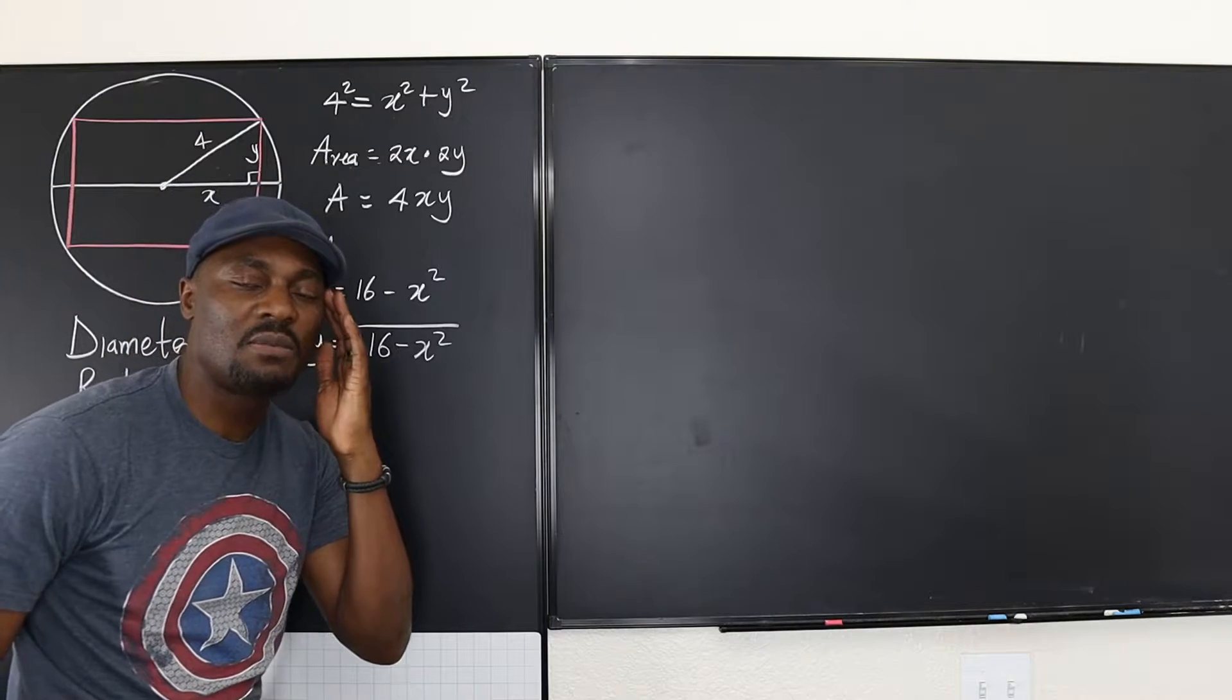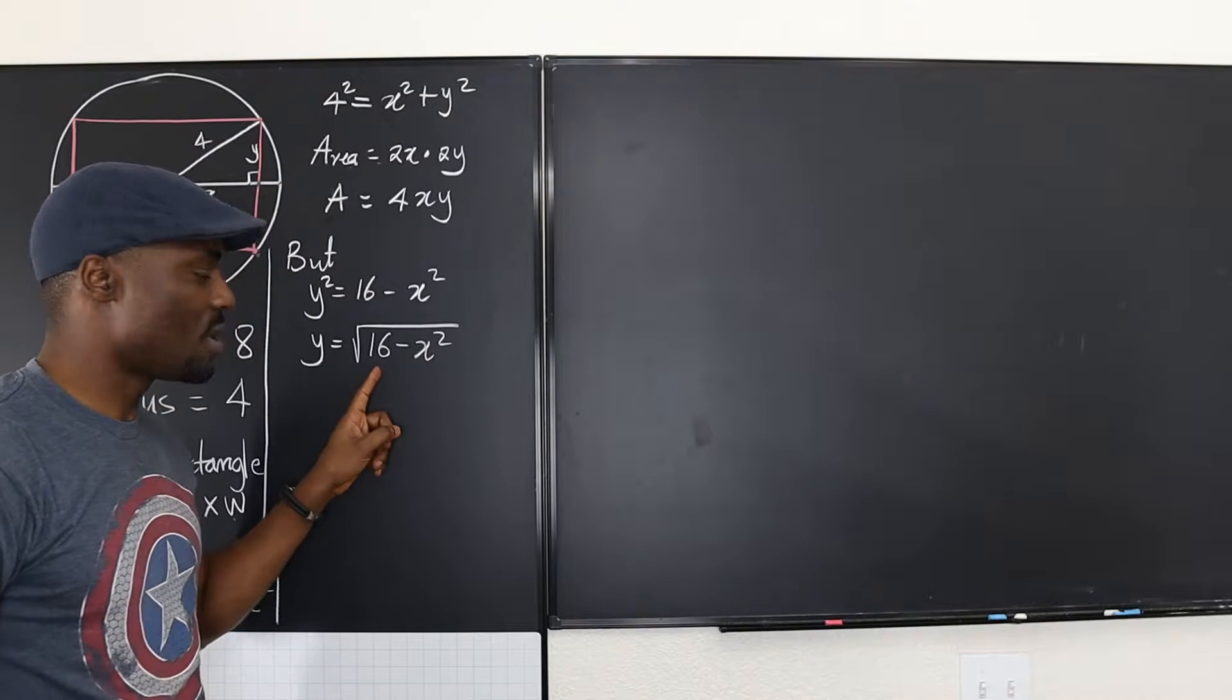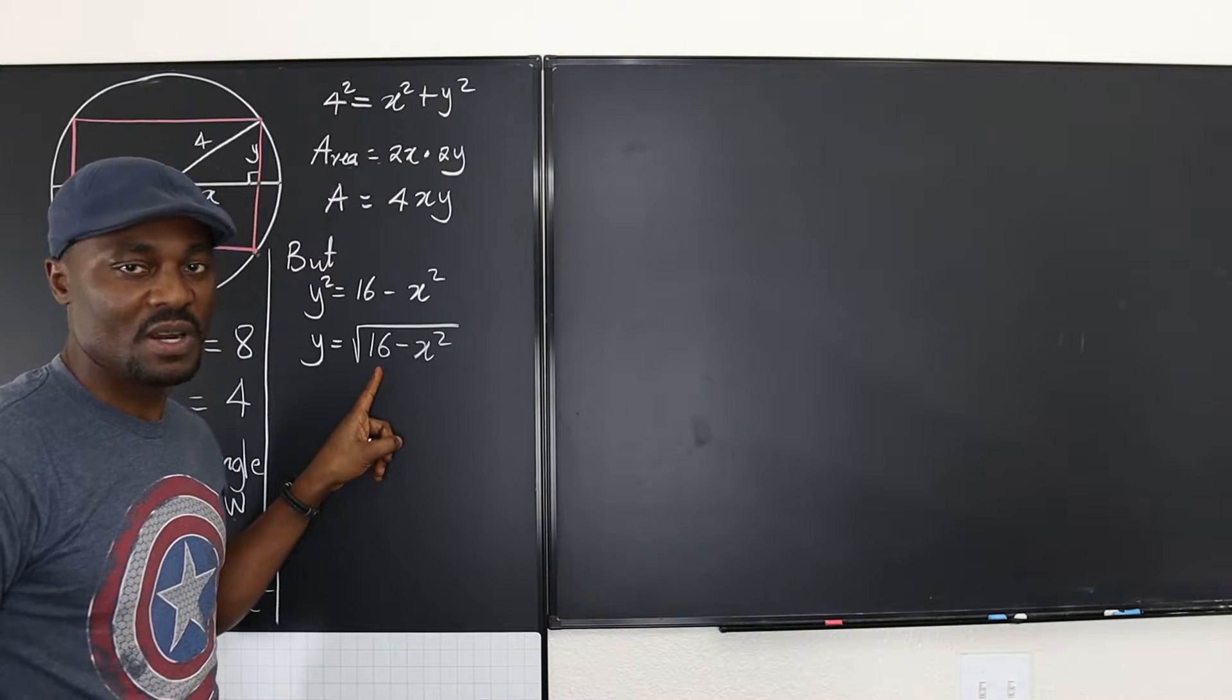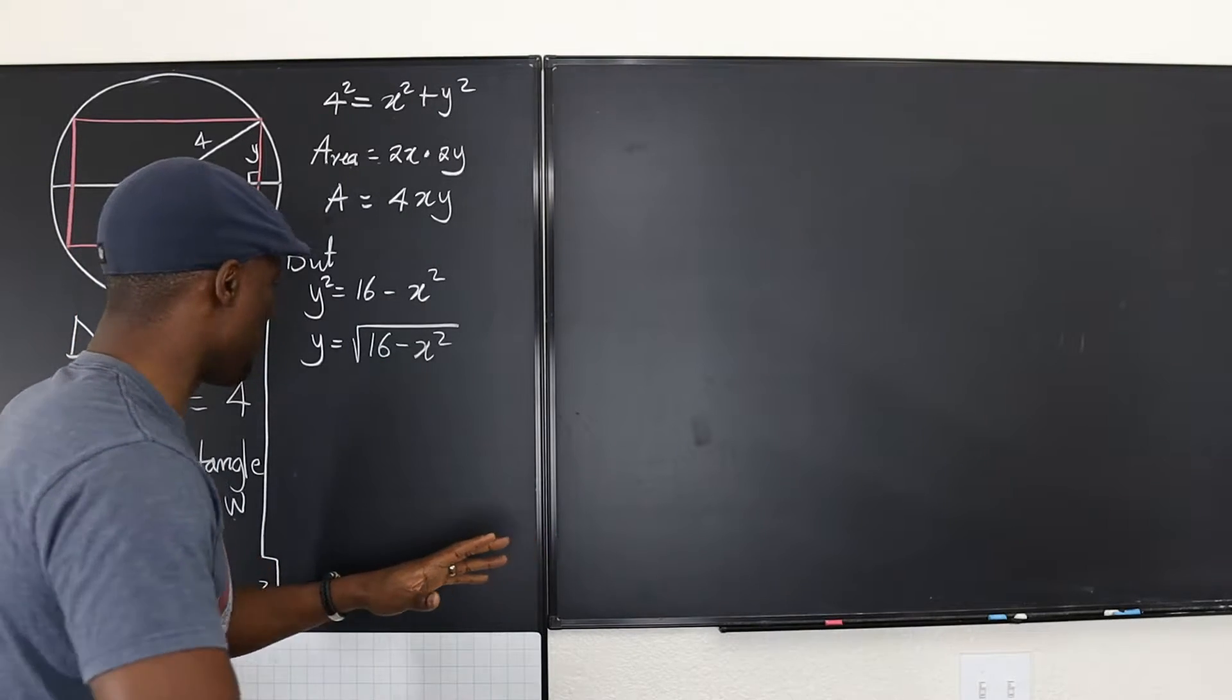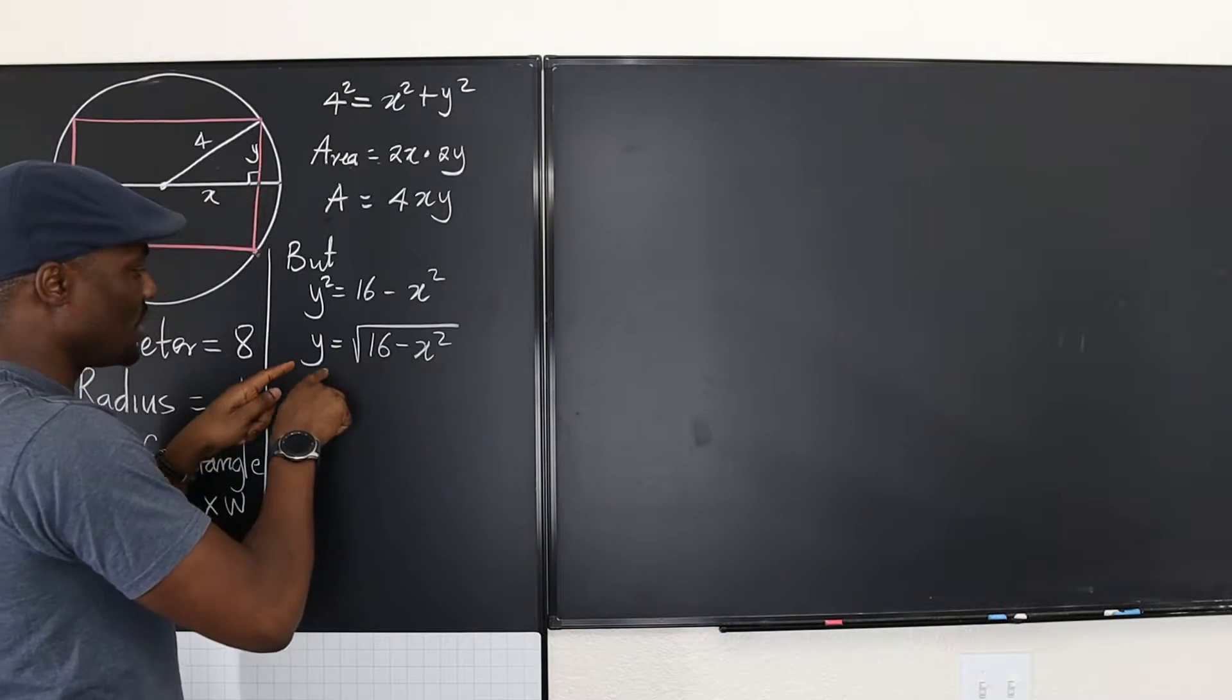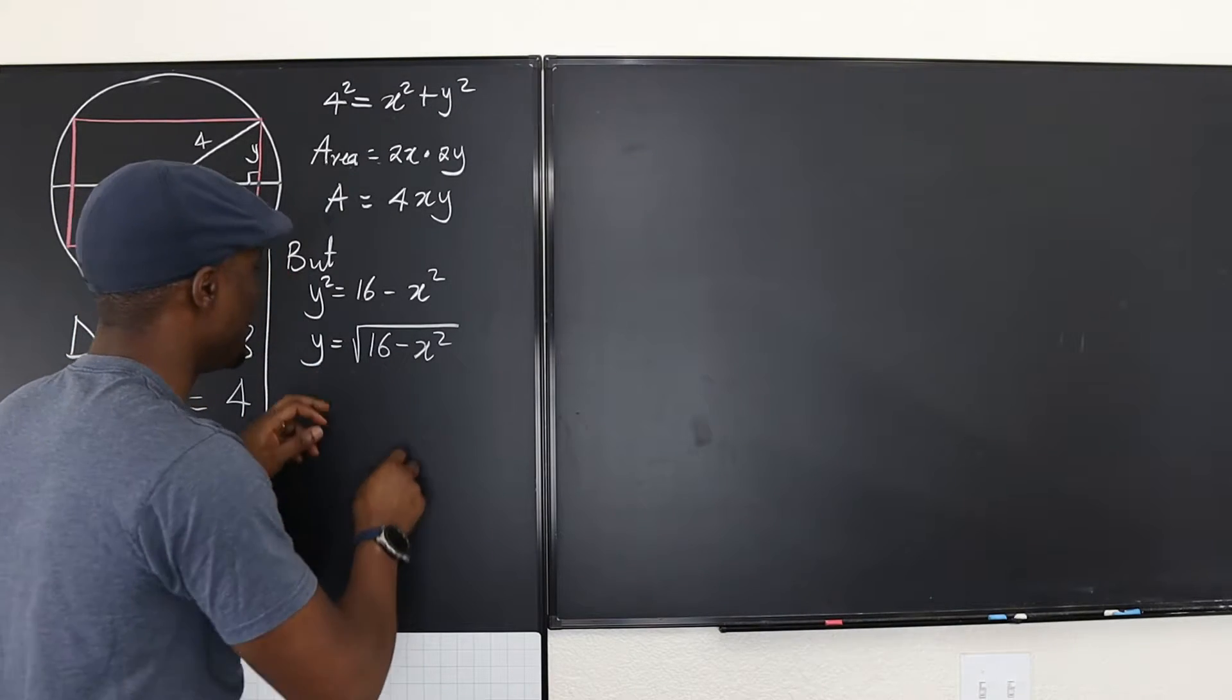So we have Y squared equals 16 minus X squared, which means Y will be equal to the square root of 16 minus X squared. Square root has shown up. Now, when some people see square root signs, they just freak out. Please don't take the square root of 16 and make this 4. It's not going to work. So you just let it be like that.